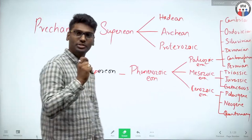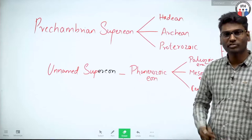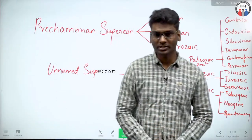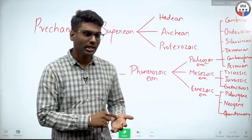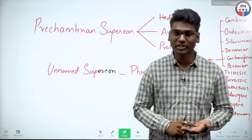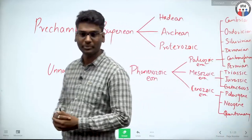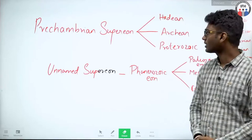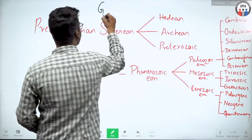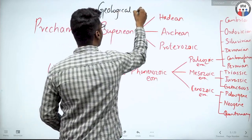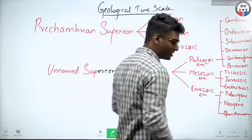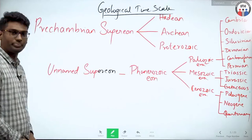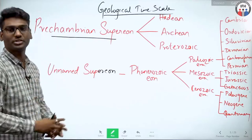The earth was formed somewhere around 4.5 billion years ago. Was the earth the same since then, or has it undergone changes? We need some reference line — we can't keep referring in millions or thousands of years always. So what geographers have done is come up with a geological time scale, which is a broad framework. This geological time scale is broadly divided into super aeons, the first being the Precambrian.